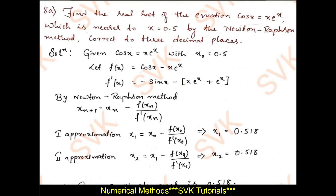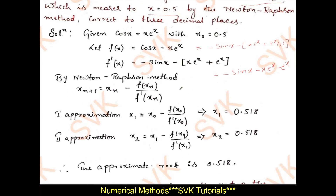Moving on to the next problem: cos x equal to x e power x. They have already provided the initial value x naught equal to 0.5. Find f dash of x: derivative of cos x is minus sin x, minus of applying product rule to x e power x gives x times e power x plus e power x times 1. Simplifying: f dash of x is minus sin x minus x e power x minus e power x. Using the calculator, for the second approximation itself you are going to get the answer as 0.517.